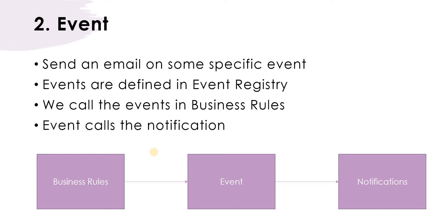So first, we will have a business rule written on some specific condition — maybe after update, after insert, before update, or before insert. If you want to learn more about business rules, please click on the top right corner. Then through the business rule the event will be called, and this event will in turn call the notification. First of all, we will create an event in the event registry.